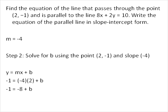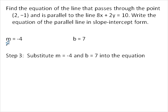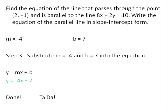Negative 4 times positive 2 is -8. We'll add 8 to both sides of the equation and find that b is equal to 7. So slope m is -4 and b is +7. We substitute m and b into y = mx + b. Y is equal to -4x + 7 — that is our answer.